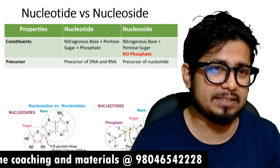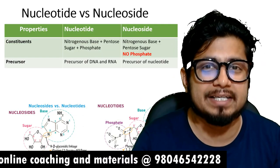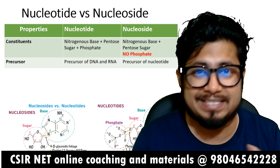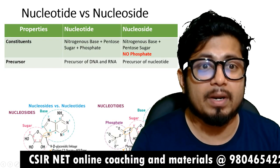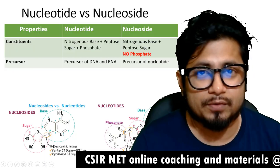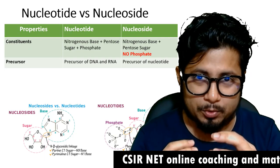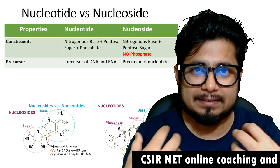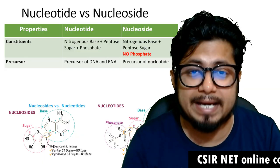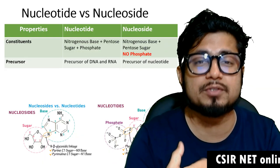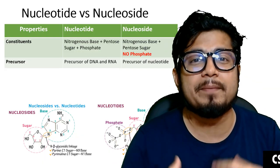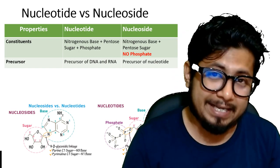The second difference is regarding the precursor role. The nucleotide is a precursor for DNA and RNA — it builds DNA and RNA — while nucleoside is a precursor of nucleotide. So first the base and pentose sugar form a nucleoside, then a phosphate attaches to become a nucleotide, and then nucleotides make DNA and RNA.